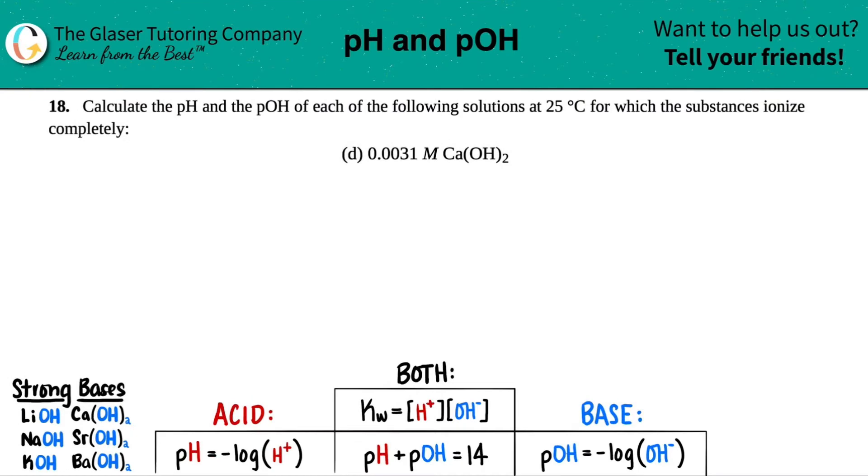Number 18. Calculate the pH and the pOH of each of the following solutions at 25 degrees Celsius for which the substances ionize completely. And then we have letter D. So in this case, we have to find the pH and the pOH of 0.0031 molarity Ca(OH)2.